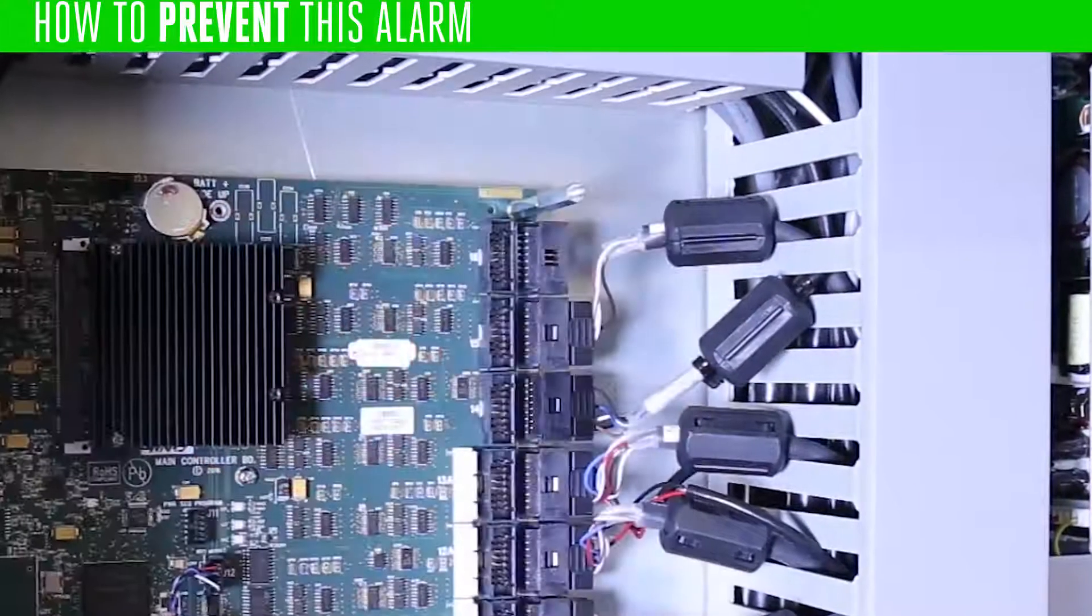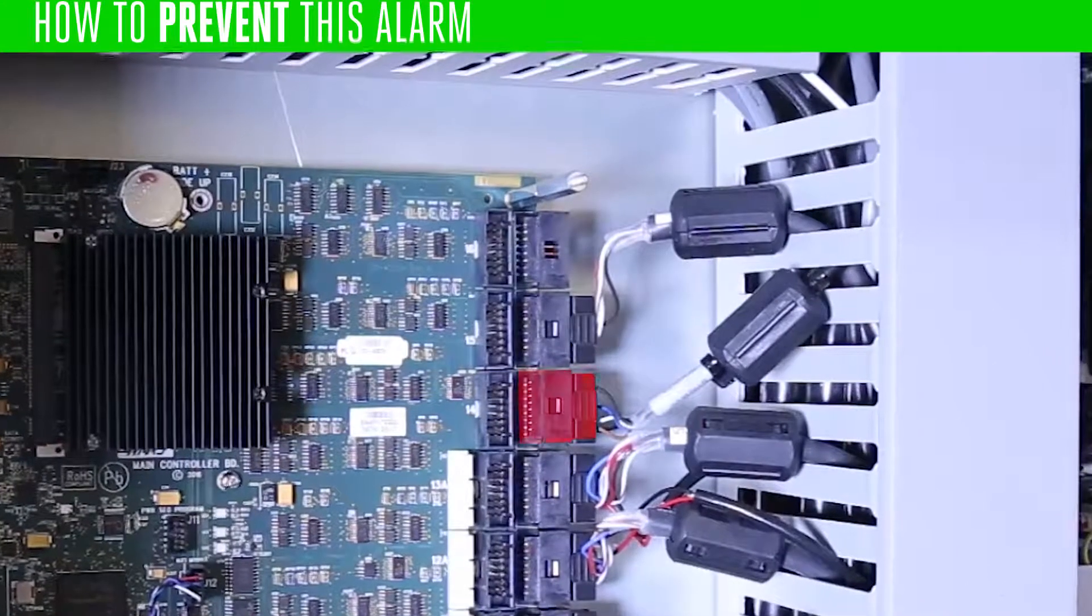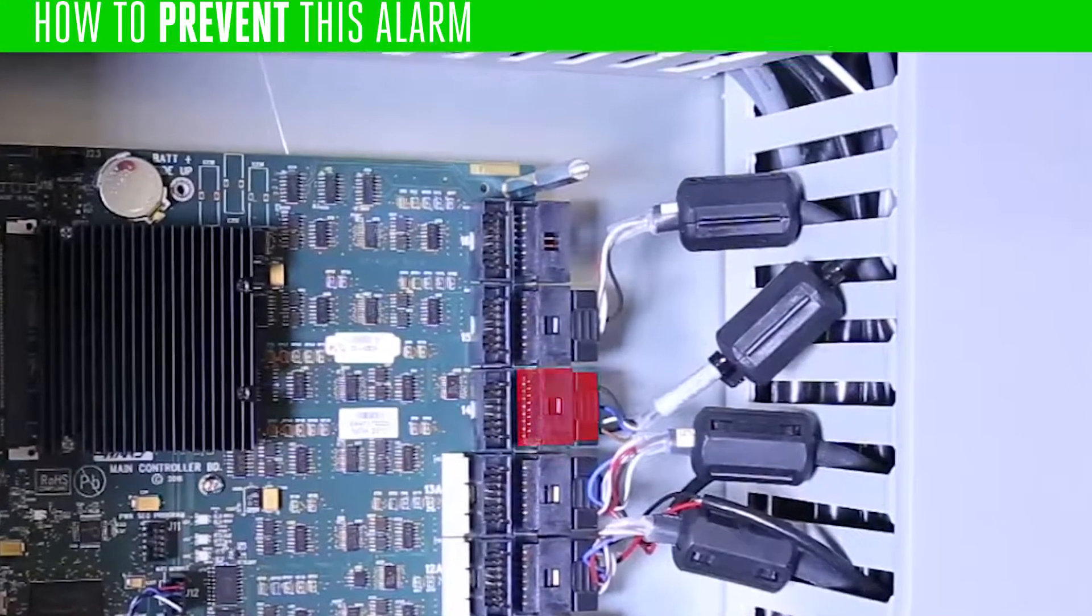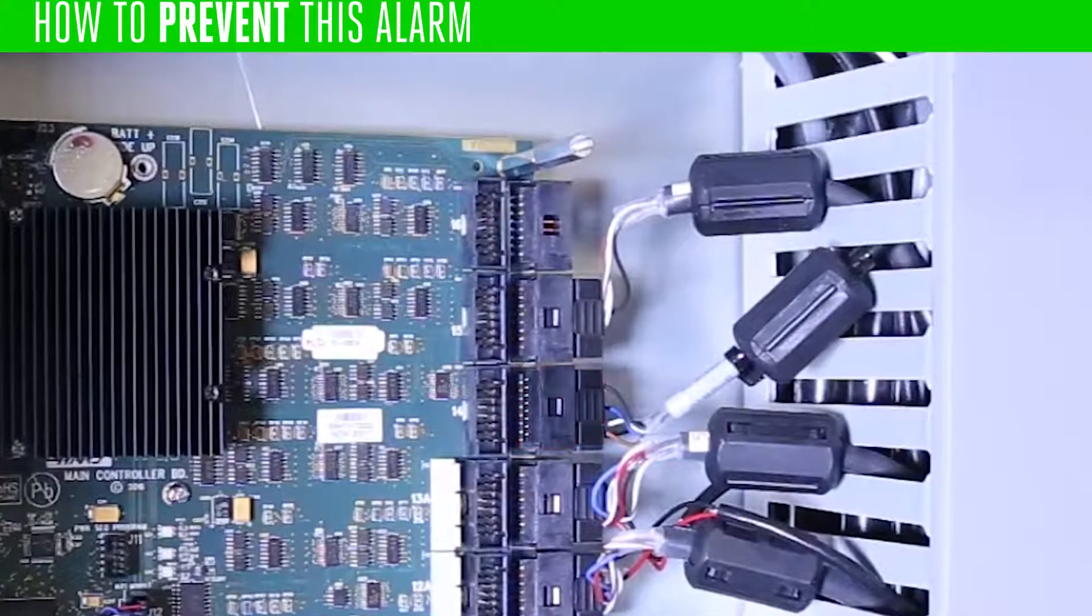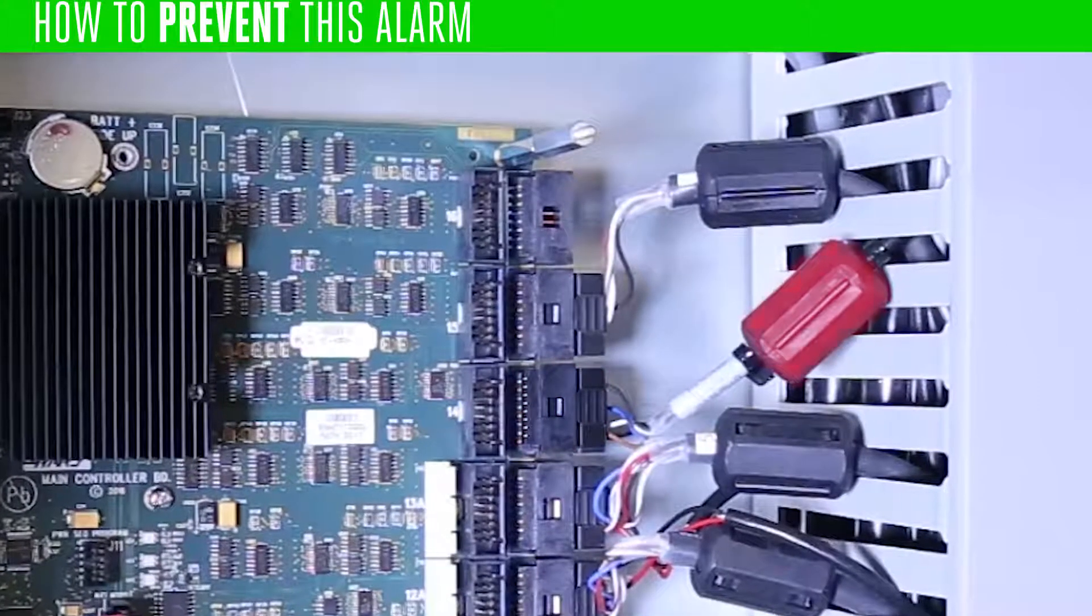First, look at where the encoder cable connects to the main control PC board. Make sure it's firmly connected and that it doesn't show signs of damage or stiffness. Check to verify that there's a ferrite filter attached to the cable.